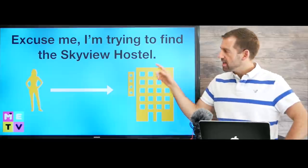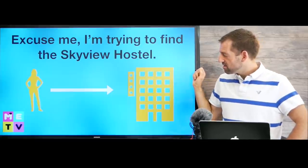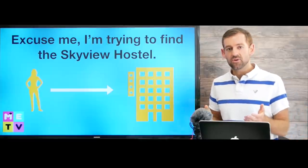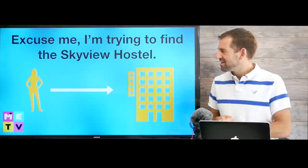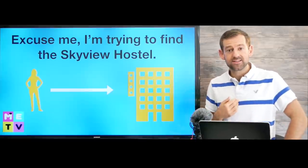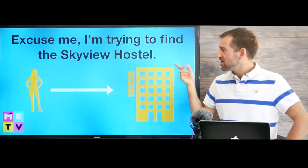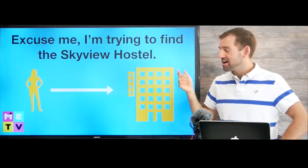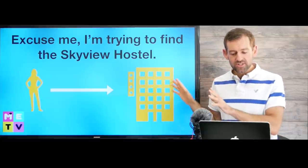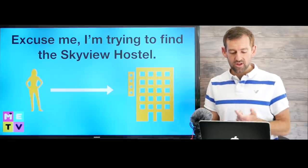Let's look at the third way: "Excuse me, I'm trying to find the Skyview Hotel." So if you're trying to find your hotel, hostel, or bed and breakfast and you're lost, you could say: "Excuse me, I'm lost. I'm trying to find the Skyview Hostel. Do you know where that is?" Those are some very easy ways to ask for directions.